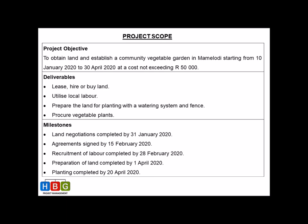Here is a very simple project scope template. The first thing we need to look at is the project objective — the overall outcome or objective that you want to attain with your project. Our overall objective must contain four things.